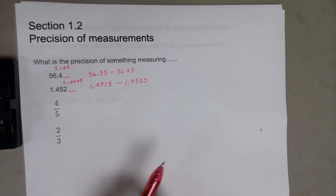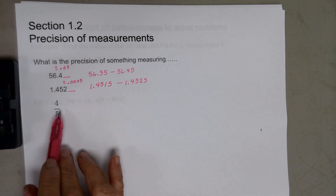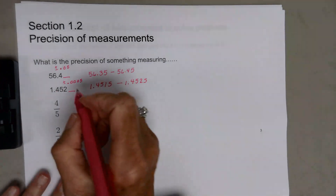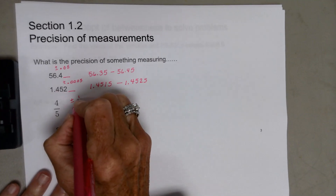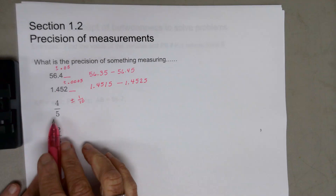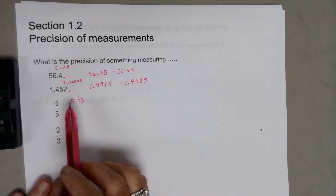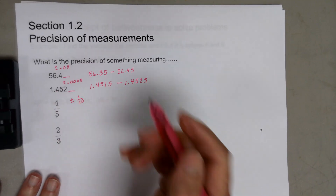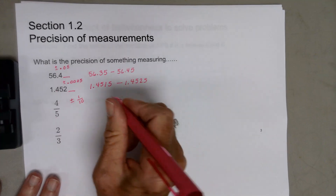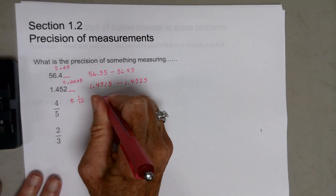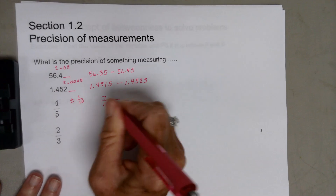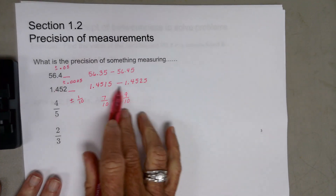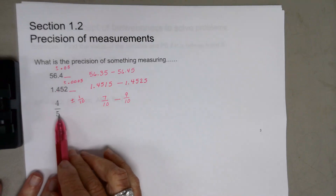When you have fractions, you do it a little differently. Take the bottom number of the fraction and multiply it by two. So for a fraction with denominator 5, I add or subtract 1/10, because 5 times 2 is 10. The original value 4/5 is 8 tenths. Subtracting 1/10 gives 7/10; adding 1/10 gives 9/10. So that is the precision of 4/5.